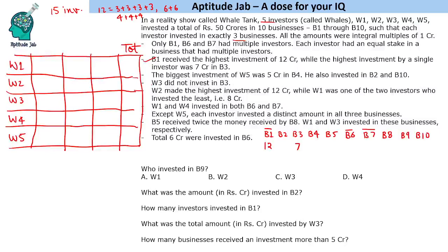The biggest investment by w5 was 5 crores in b4, and that was his highest investment in any business. He also invested in b2 and one more business — amounts not yet known. W3 did not invest in b3.